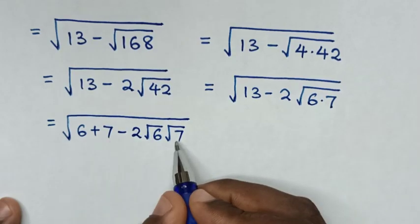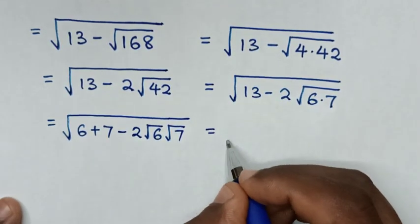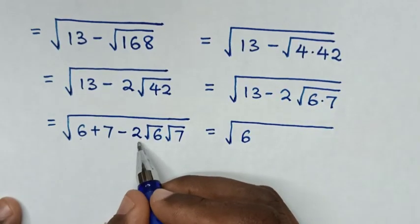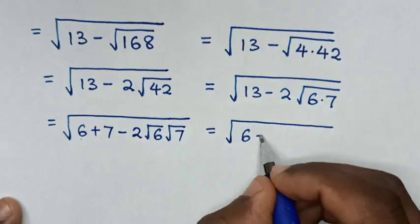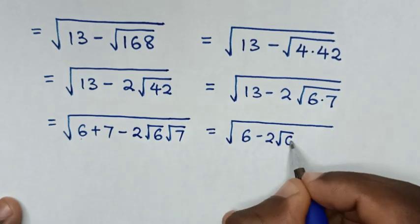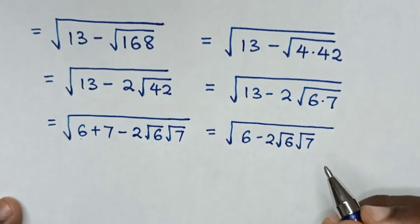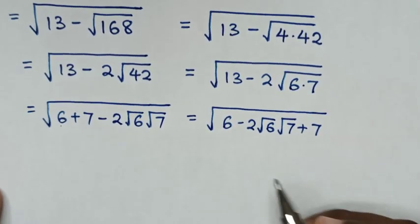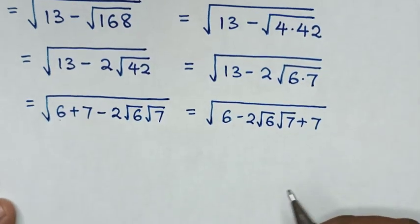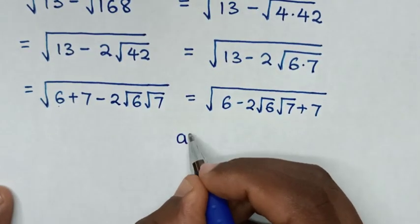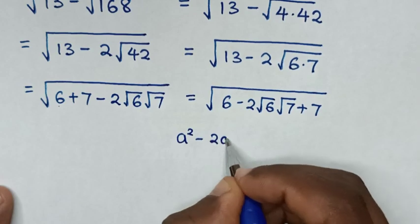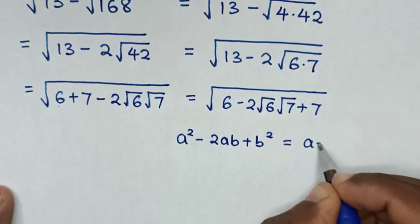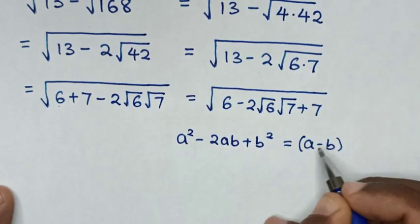In the next step we rearrange this. So it will be equal to square root of 6, then minus 2 square root of 6 times square root of 7, then plus 7. The expression under the square root is in the form of a² minus 2ab plus b², which is equal to (a minus b) squared.